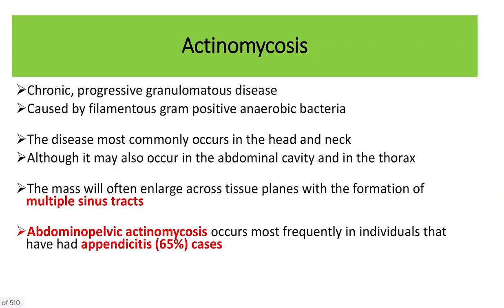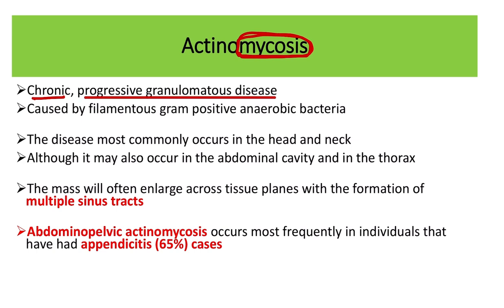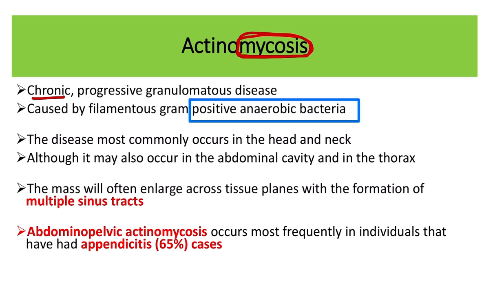Let's look at the details about actinomycosis. Actinomycosis is named like a fungus — 'mycosis' relates to fungus — but actinomycosis is actually a gram-positive organism. It causes chronic and progressive granulomatous disease and is caused by gram-positive anaerobic bacteria. It is not a fungus; it is a gram-positive bacterium.